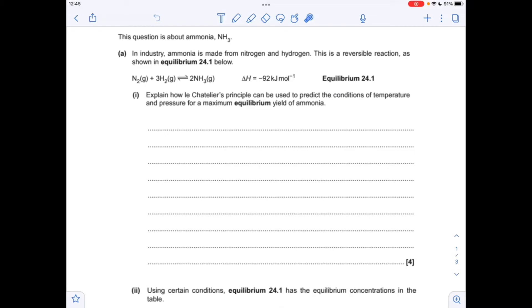Okay, so let's make a start. We've just got to use Le Chatelier's principle to predict the conditions of temperature and pressure that will give a maximum yield for ammonia.